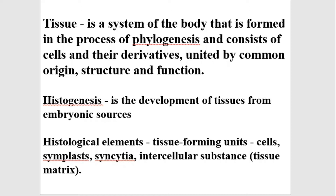The next possible tissue-forming unit is the syncytium. These are structures organized as a result of incomplete mitotic division. It looks like many cells that are not separated and are connected to each other by procytoplasmic branches. If cells stop mitotic division before telophase, we get a syncytium. Examples include spermatogenic epithelium and syncytiotrophoblast.